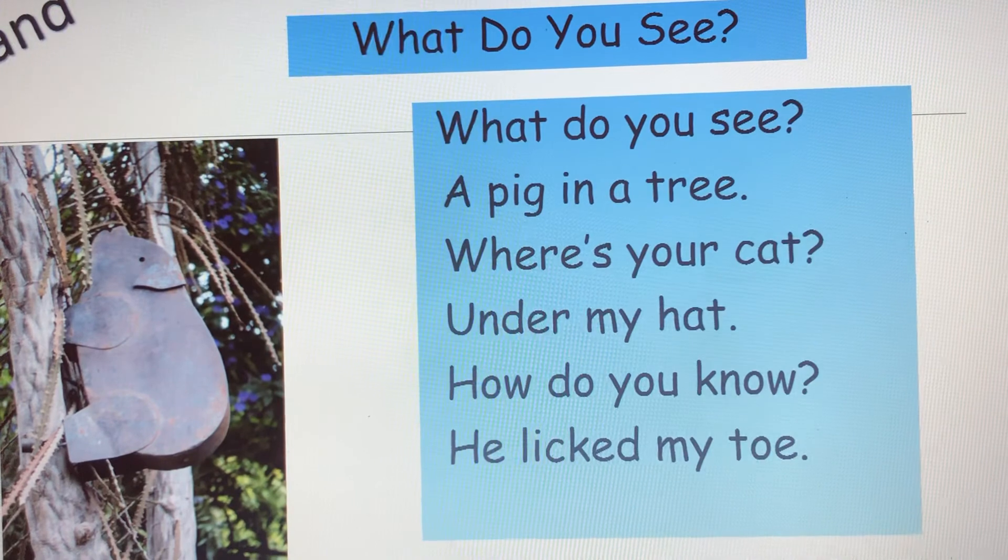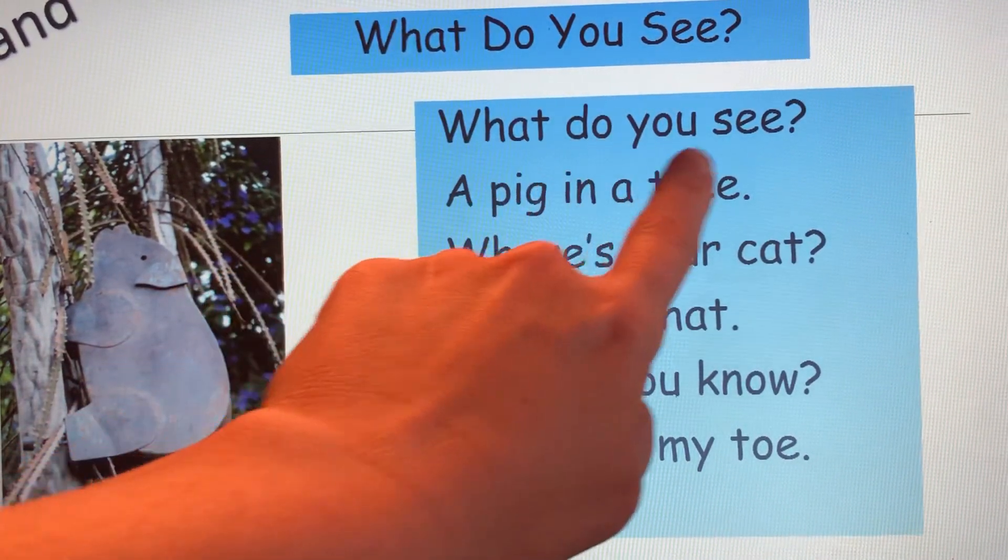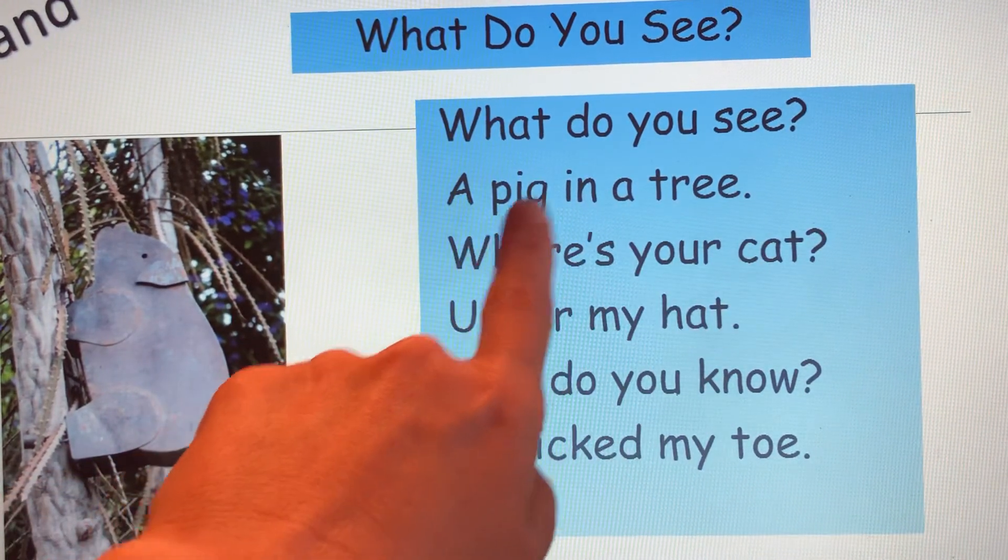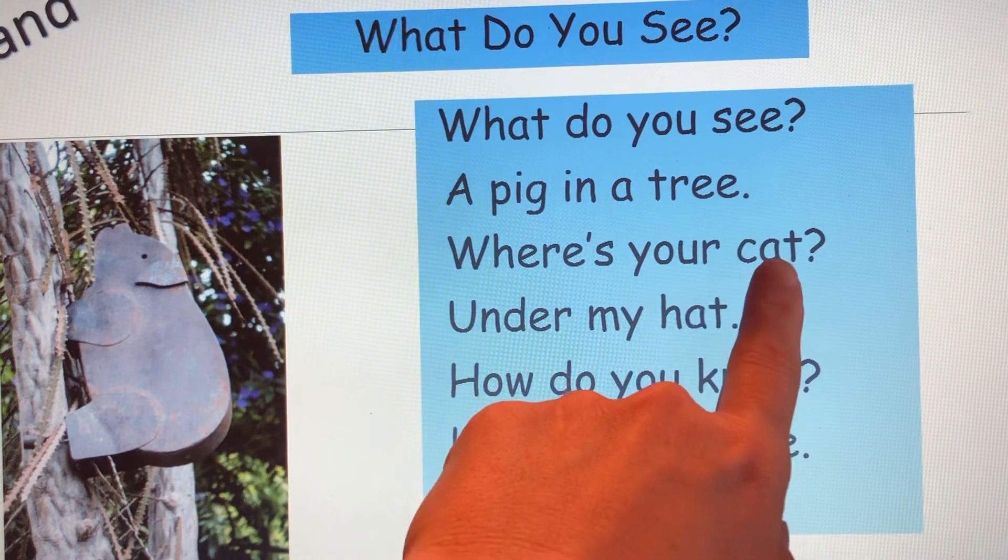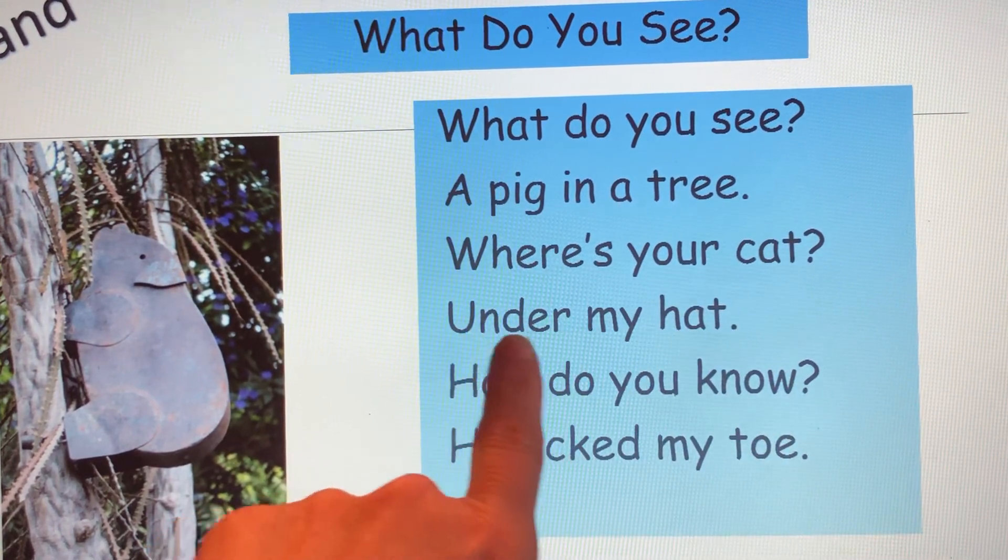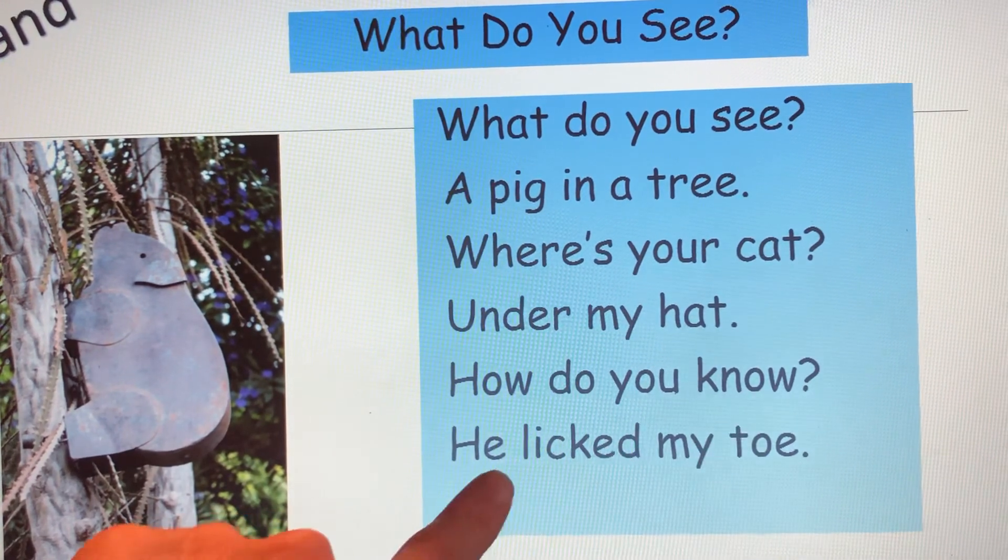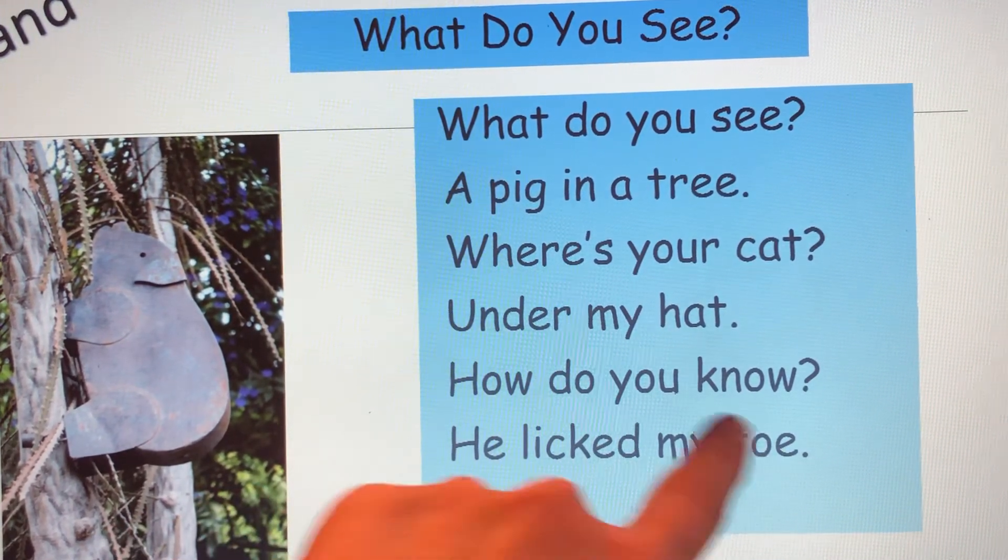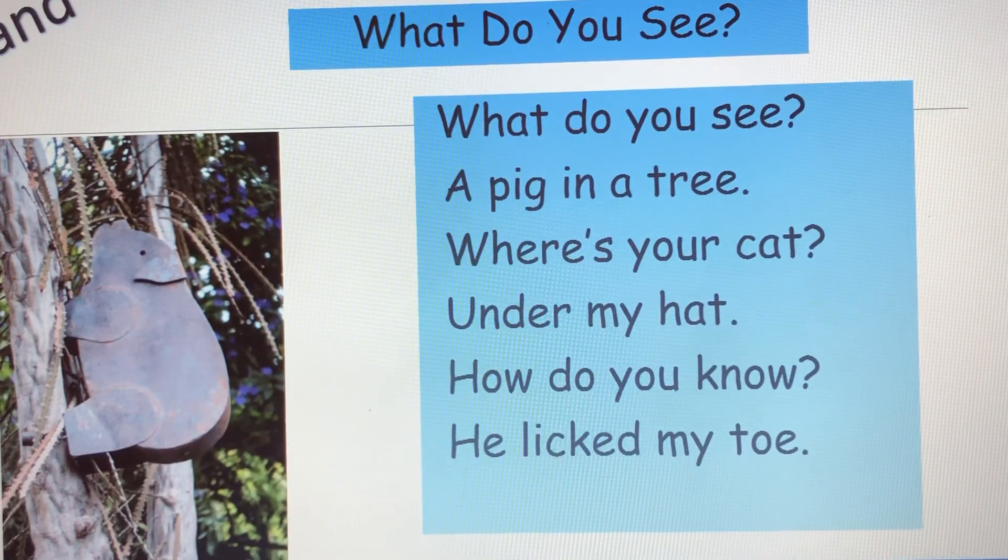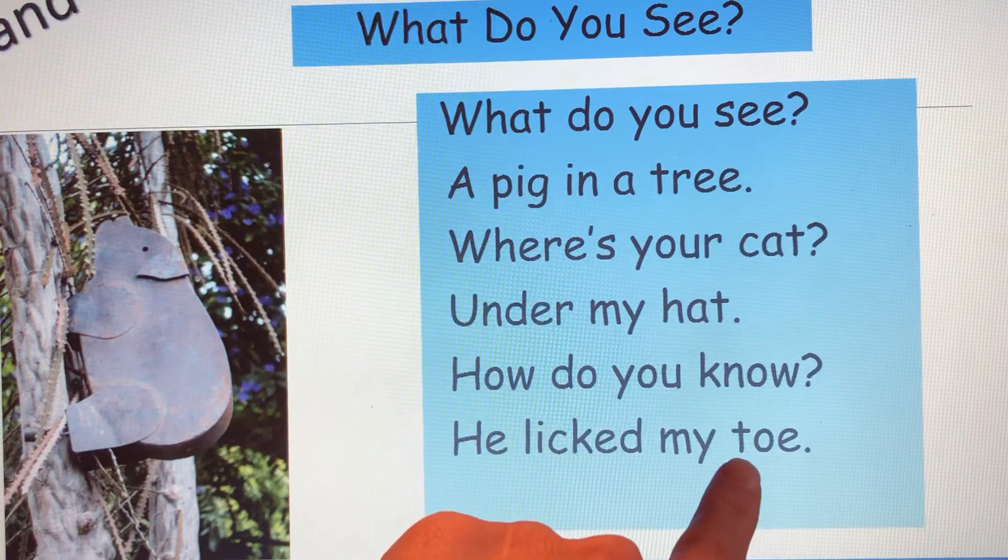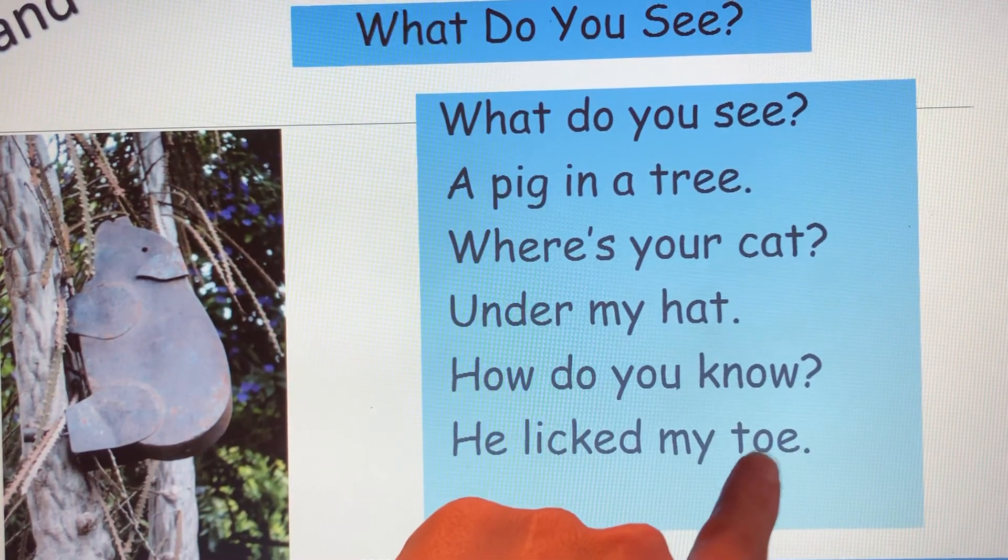Why don't you read it with me? What do you see? What do you see? A pig in a tree. Where's your cat? Under my hat. How do you know? He licked my toe. Can you find the word toe? Point to it. Good job. And remember, we learned about digraph OE today and toe is our key word.